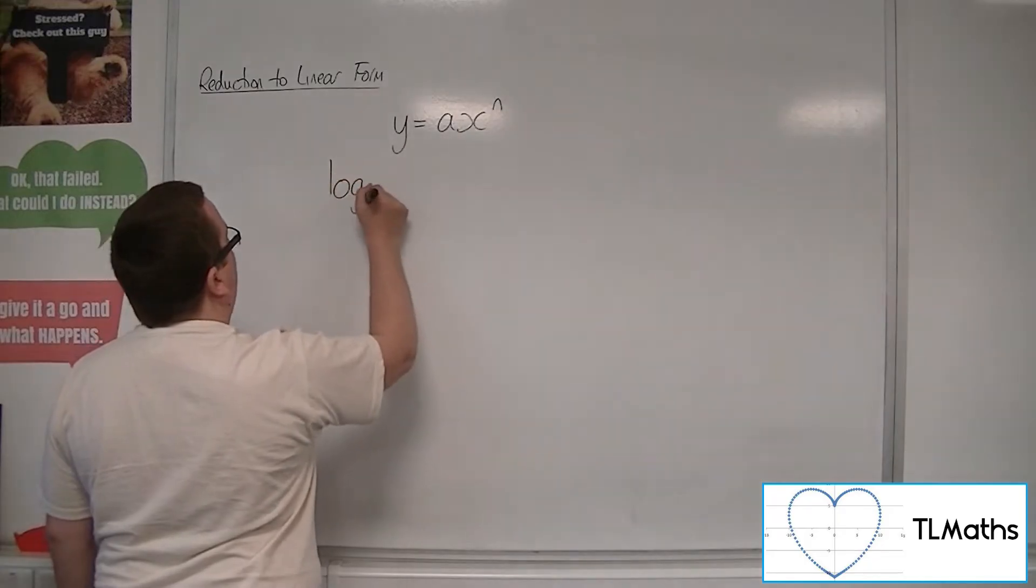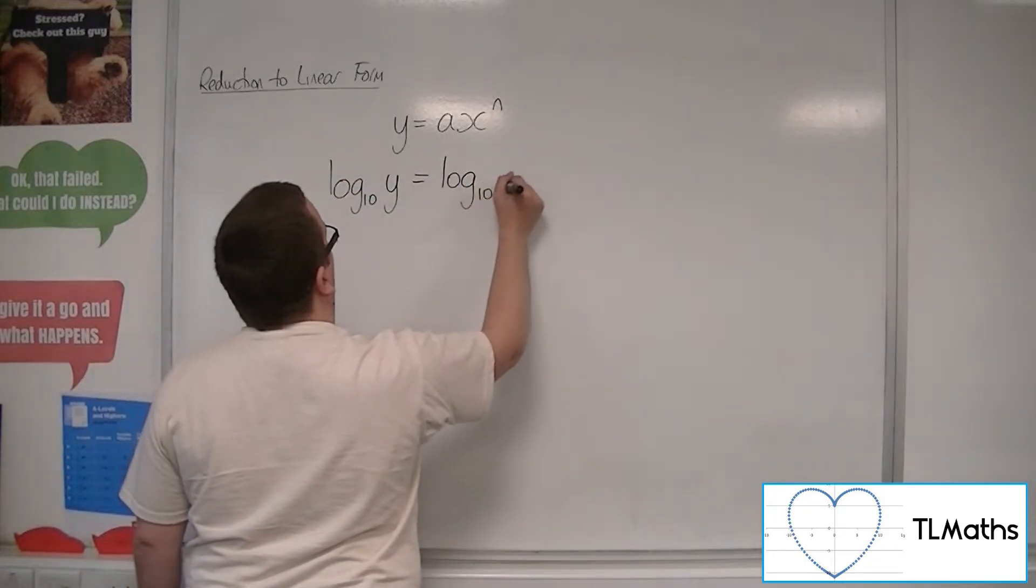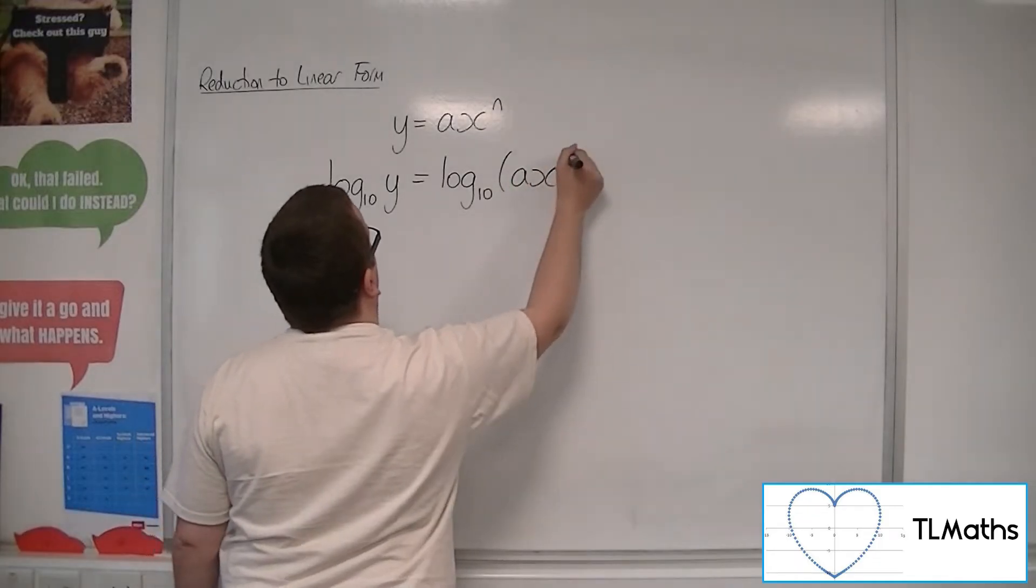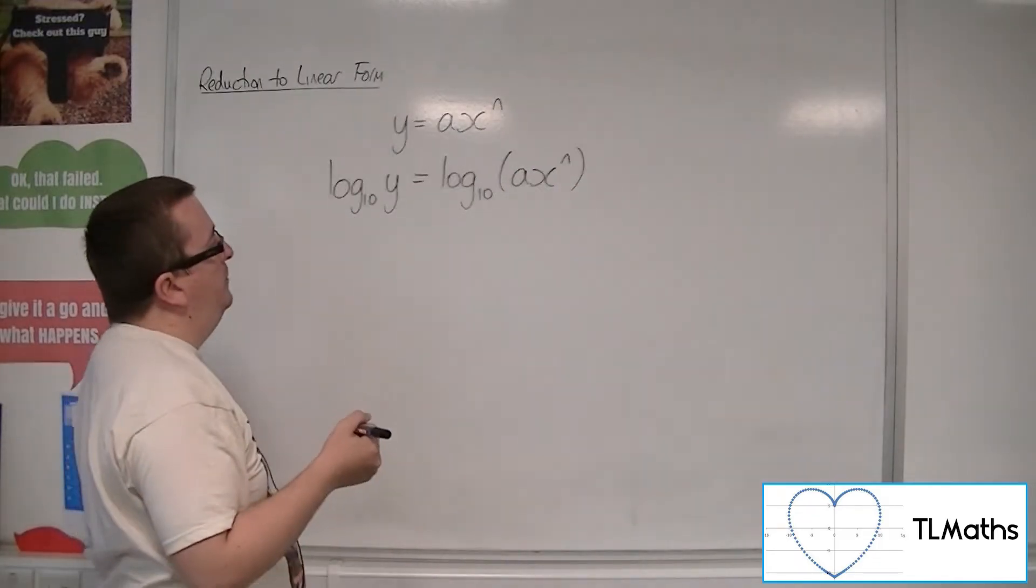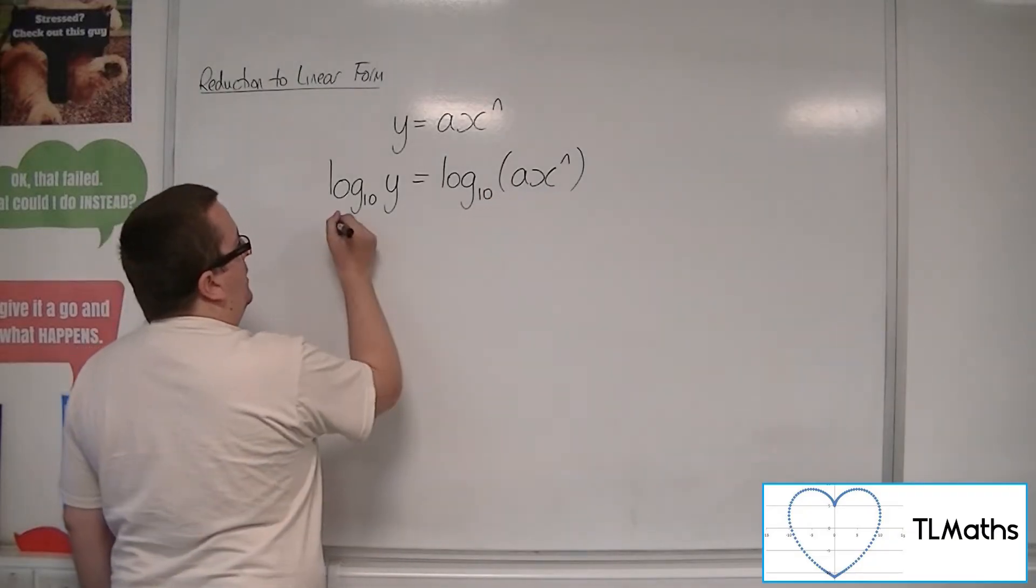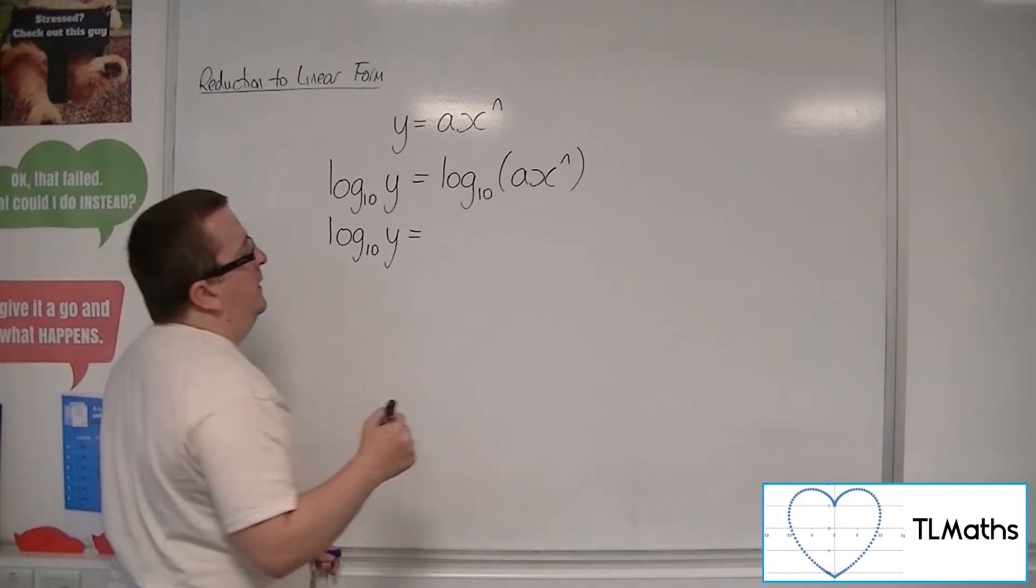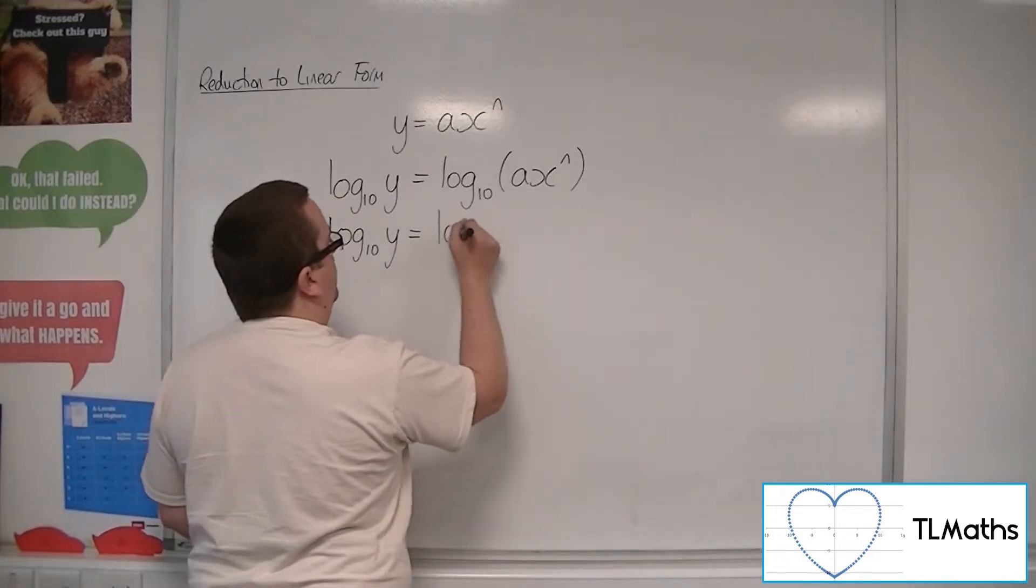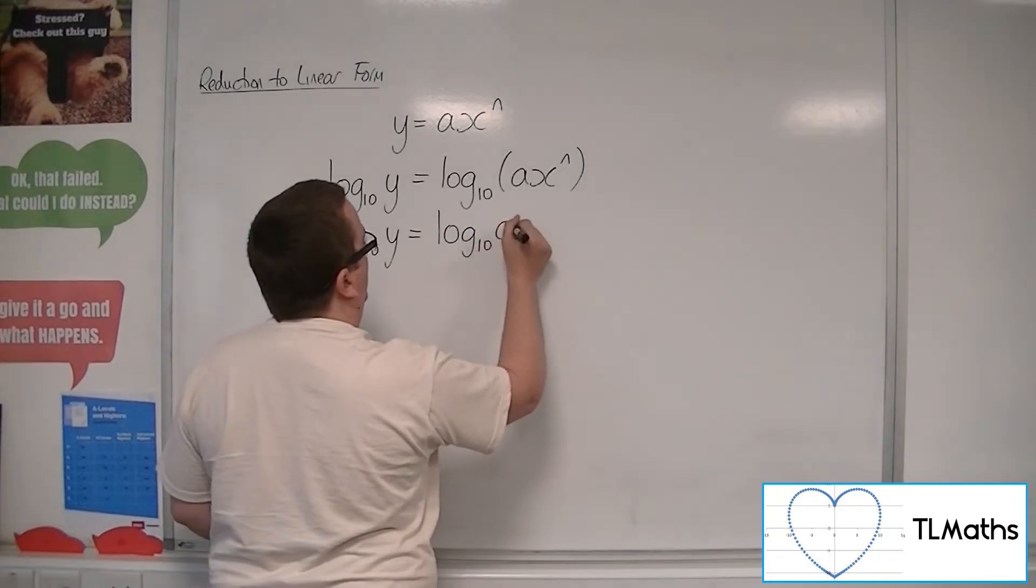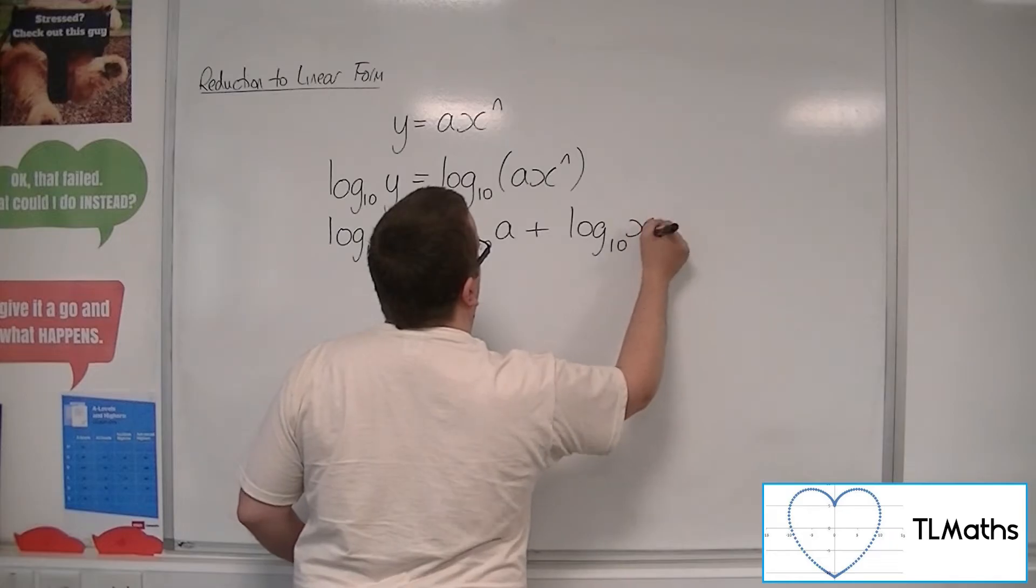So if we take log base 10 of the left-hand side and log base 10 of the right-hand side, what we can now do with the right-hand side is break it apart using our log laws. So we know that this will be equal to log base 10 of a plus log base 10 of x to the n.